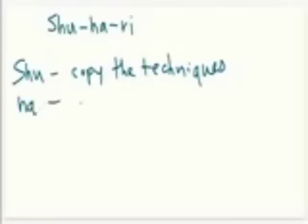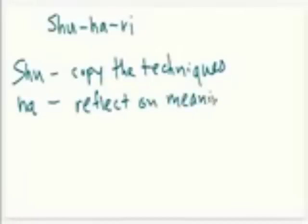At the Ha level is where you reflect on the meaning. So you're still doing those techniques that you've learned the mechanics of, but now you can look at the why behind it and how things relate to each other, what the background of it is, and just get a little bit deeper into it—but only after you've learned the mechanics of it.